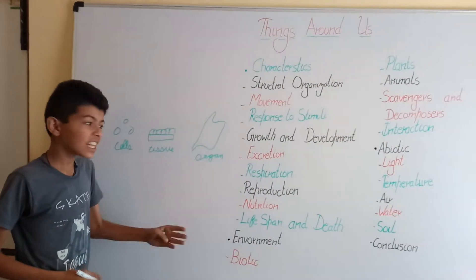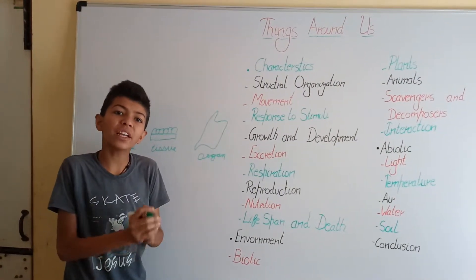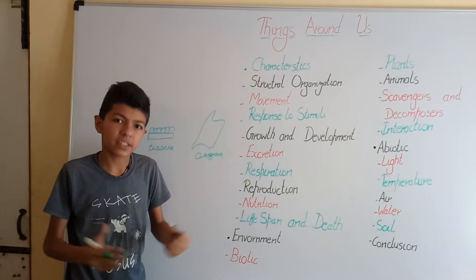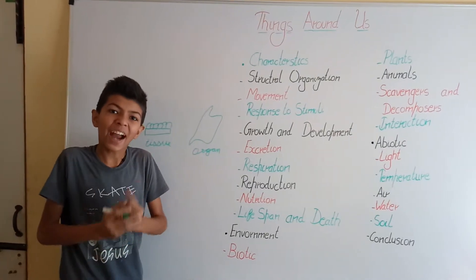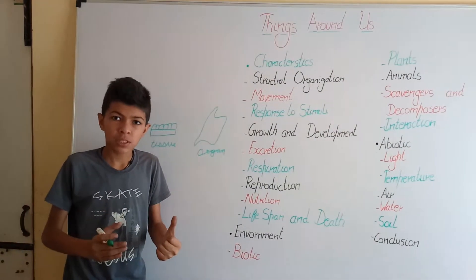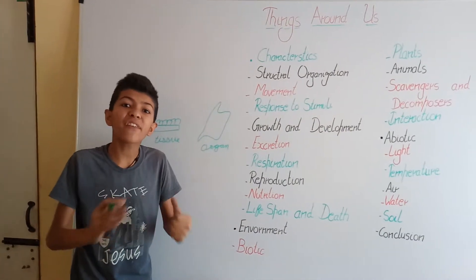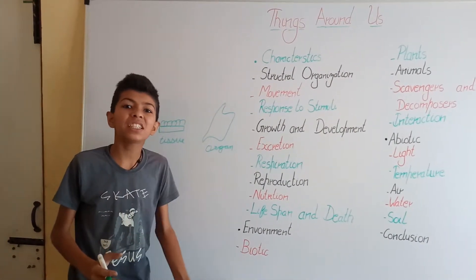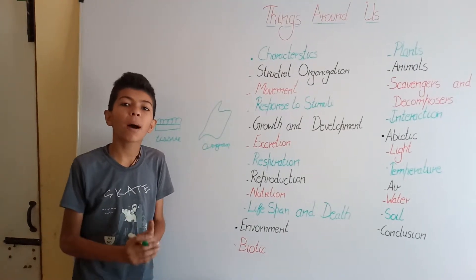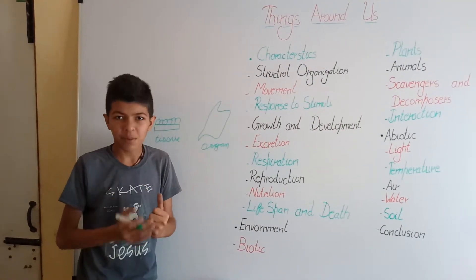When a group of organs comes together doing a particular work, they form organ systems. When many organ systems come together and carry out life processes such as digestion and respiration, they form a complete individual — you and me.